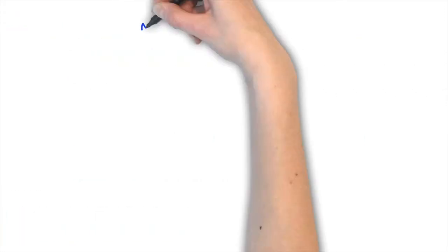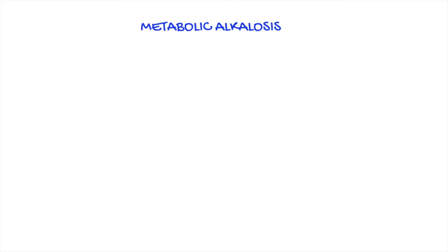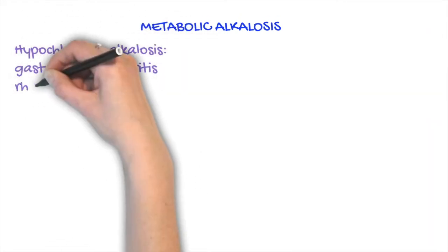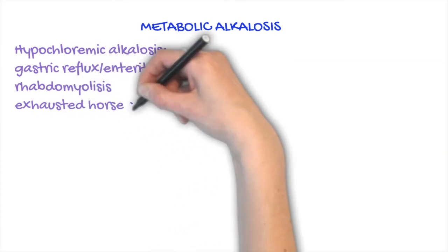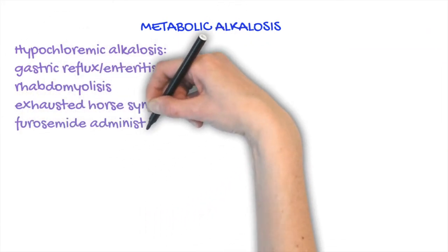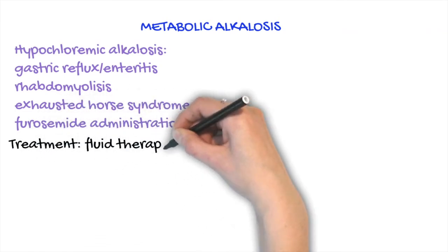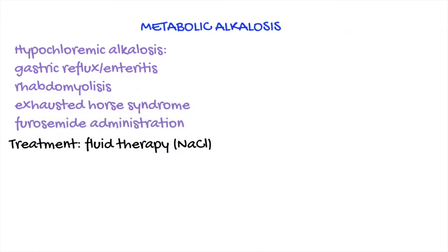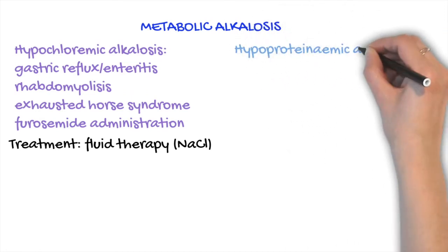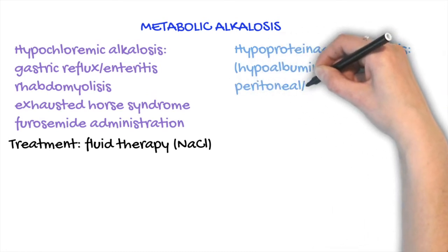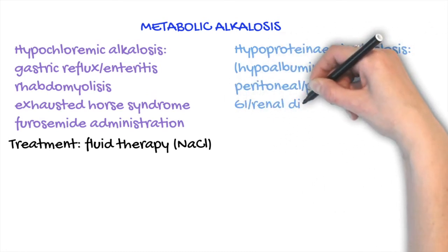Metabolic alkalosis can be caused by a decrease in chloride, which occurs with reflux or enteritis, rhabdomyolysis, exhausted horse syndrome, and administration of furosemide. Treatment is still fluid therapy, but with an acidifying fluid such as physiologic saline solution.